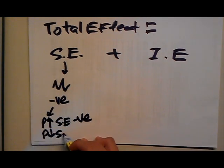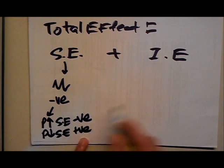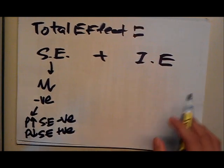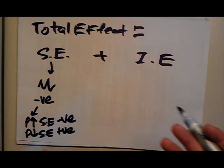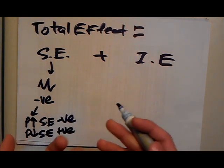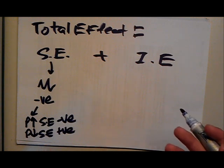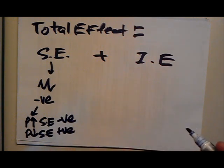Now, the income effect is the individual's reaction in terms of whether he sees the good as normal or an inferior good. When the customer has a rise in real income, how he reacts to that will depend on whether it's a normal or inferior good.